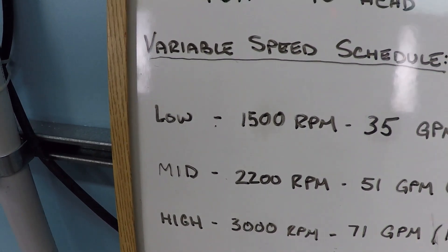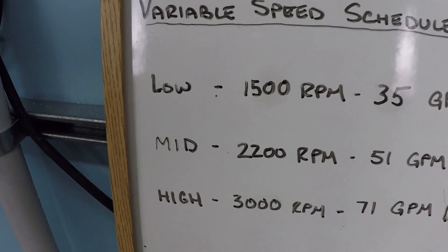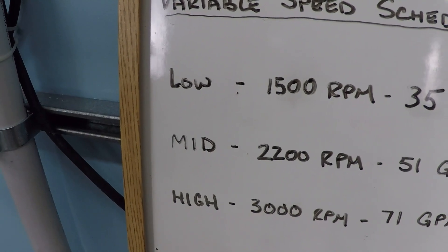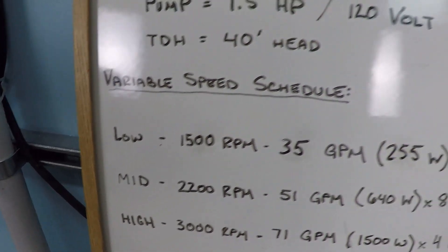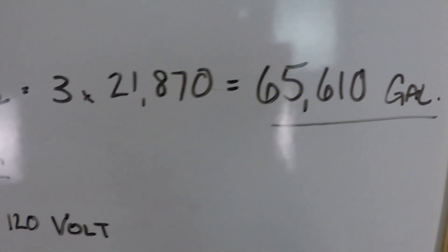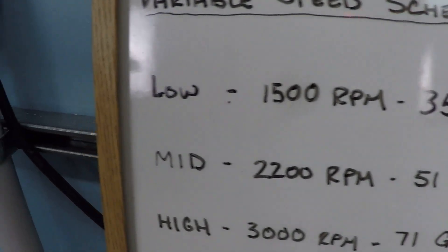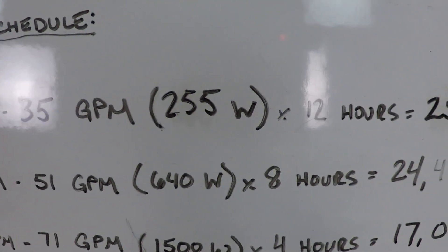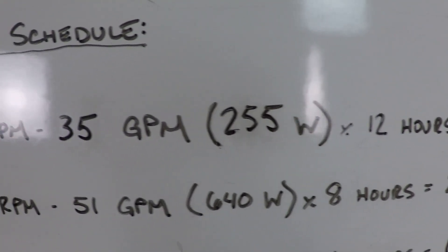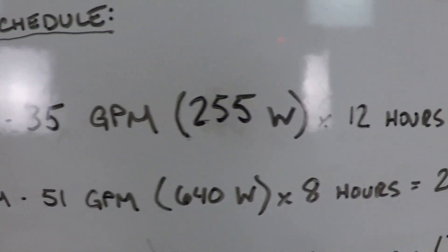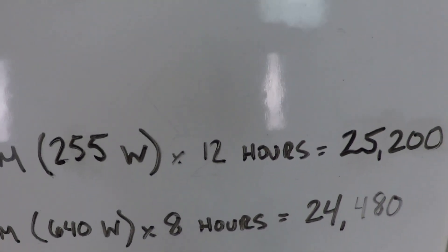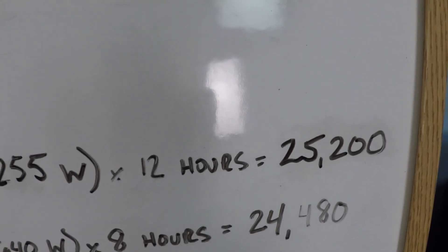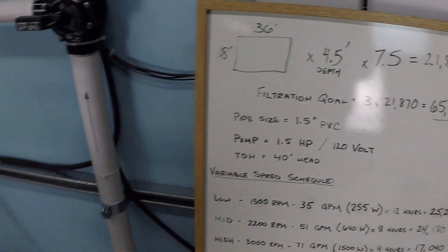Because this is a larger pool, there's no periods at 700 or 900 RPM - we need a lot of flow volume to get 65,000 gallons every day. Our low period at 1500 RPM is about 35 gallons per minute, 255 watts of power consumption. If we run that for a 12 hour period, we will result with 25,200 gallons of filtered water.